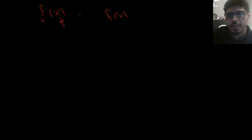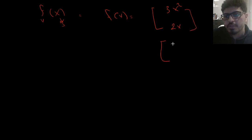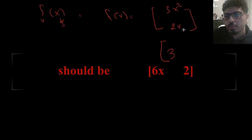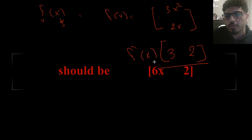Now scenario four: we've finished looking at cases where f was a scalar-valued function. Now let's look at f as a vector-valued function where x is a single variable. An example: f(x) = [3x², 2x]. Taking the derivative is simple — f'(x) = [6x, 2].